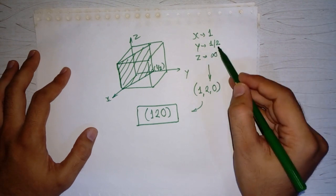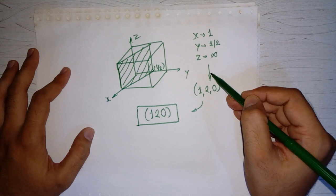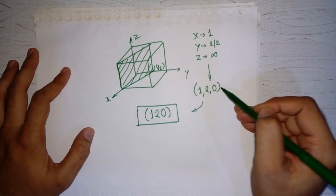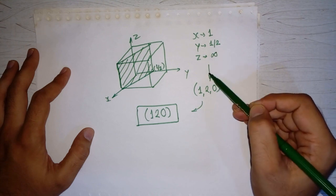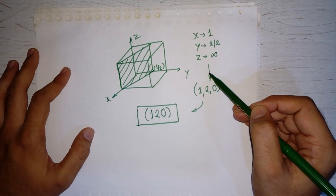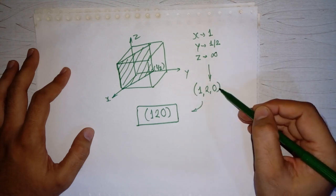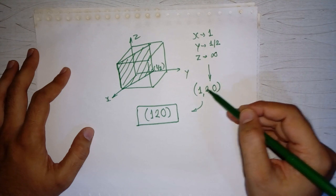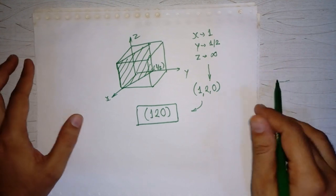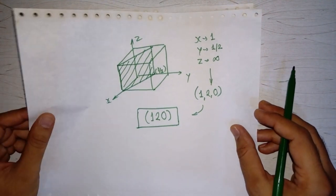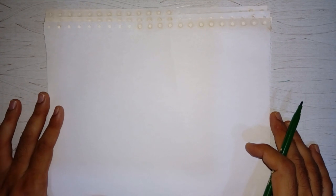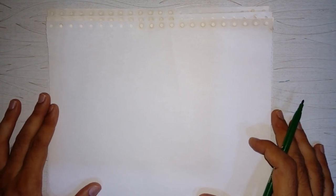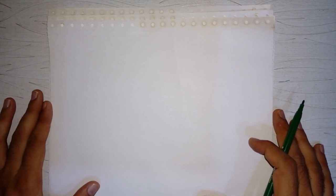Here we can see that the intercept is a fraction, but since we are taking the reciprocal, we don't need to multiply by any factor. Sometimes after taking the reciprocal we may get a fraction again — in that case, multiply by some factor to convert it into an integer. This is how we give designation to crystallographic planes. Next, we will discuss designation of crystallographic directions on the hexagonal system, which is different from the cubic system — that will be covered in the next lecture.